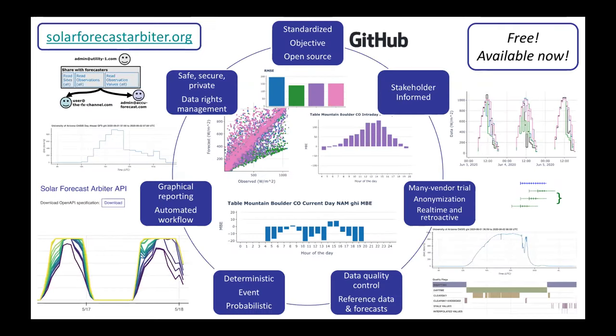Evaluation of solar forecasts encompasses a lot of topics, so the Solar Forecast Arbiter has a lot of pieces. For years, we've seen renewable energy forecasts validated and analyzed using a range of ad hoc methods that have resulted in constant recreation of the wheel, non-repeatable results, and disputes over their validity. We wanted to change that. All of the project software is implemented in open source packages available on GitHub. We encourage the community to view, audit, and improve our code.